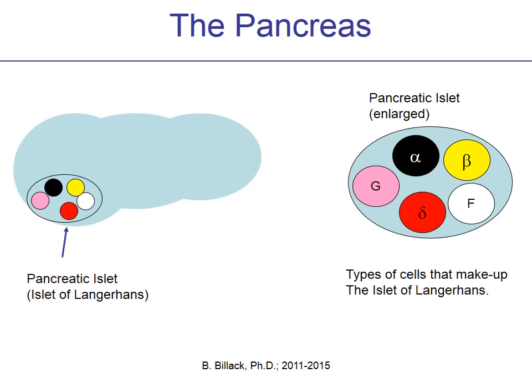If you look more closely at these islets, you'll see that there are actually several cell types that make them up. They're labeled as alpha, beta, gamma, delta, and F cells. While delta cells and F cells are very important in terms of the hormones they produce, in terms of diabetes, the alpha cells and the beta cells are going to be primarily the cells we discuss.